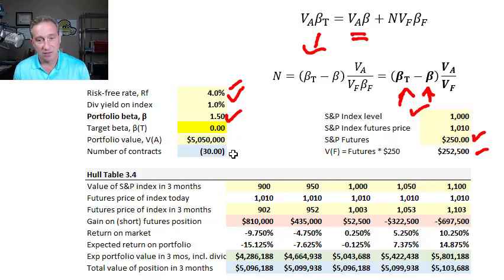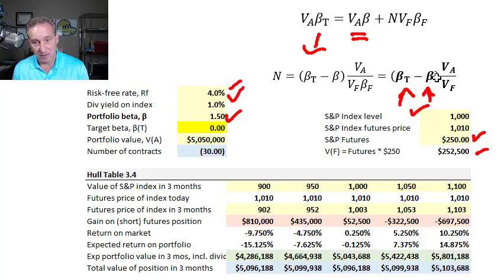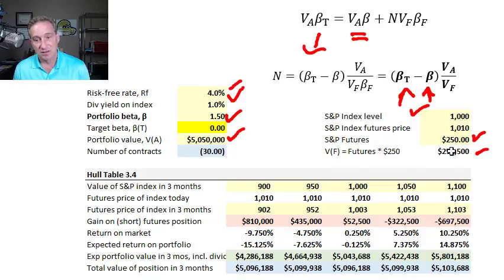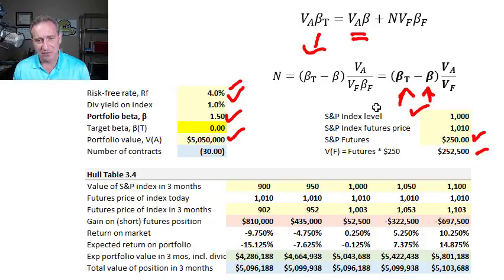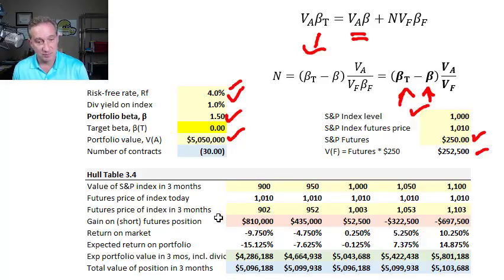Solving for the number of contracts using this formula: it's the change in beta, which in this case is zero minus 1.5 — so negative 1.5 — times the ratio of portfolio value in the numerator divided by the notional value of a single contract in the denominator. That gives us negative 30. The negative sign indicates it's a short position in futures contracts to reduce the beta, which should be intuitive.